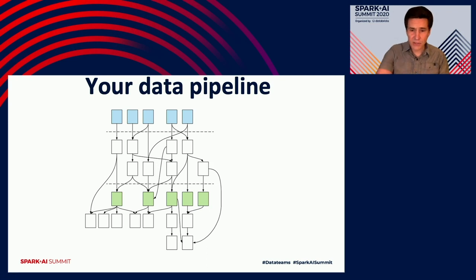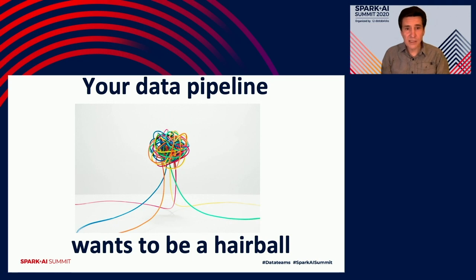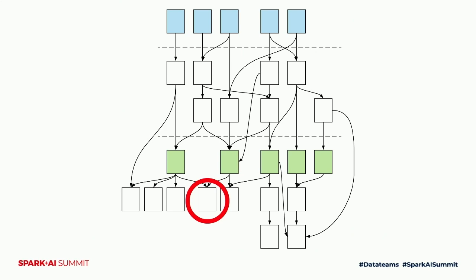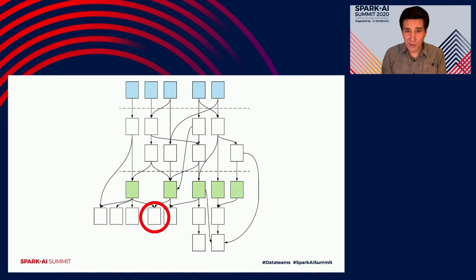Everything's great — you deliver value and results. But this picture starts looking like a hairball. The data pipeline really wants to be a hairball, and unlike what in regular software engineering is called spaghetti code, it's not a bug. This is the natural state of data pipelines — this is how they become valuable. But you have this fear that if you want to refactor your pipeline, touching one thing will create breakage somewhere else.